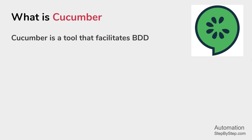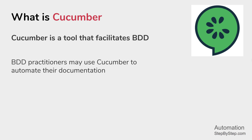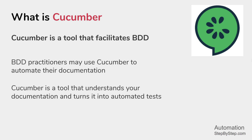Now let us move to what is Cucumber. Cucumber is a tool that facilitates BDD. There are multiple tools that can be used in the BDD process, and Cucumber is one of them. If you are practicing BDD in your organization, you may use Cucumber to automate your documented examples. We can say Cucumber is a tool that understands your documented examples and can turn them into automated tests.